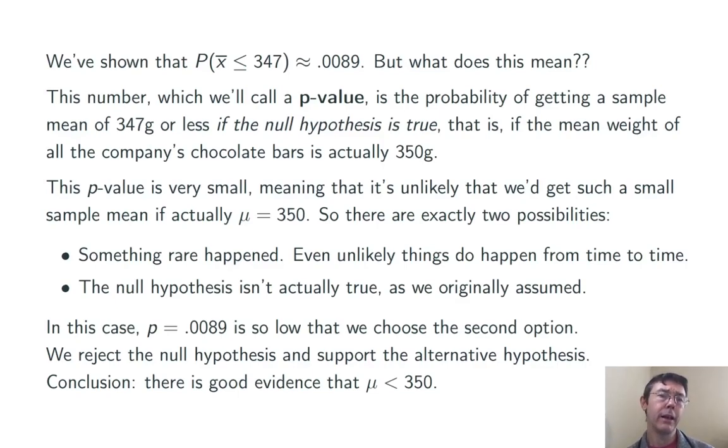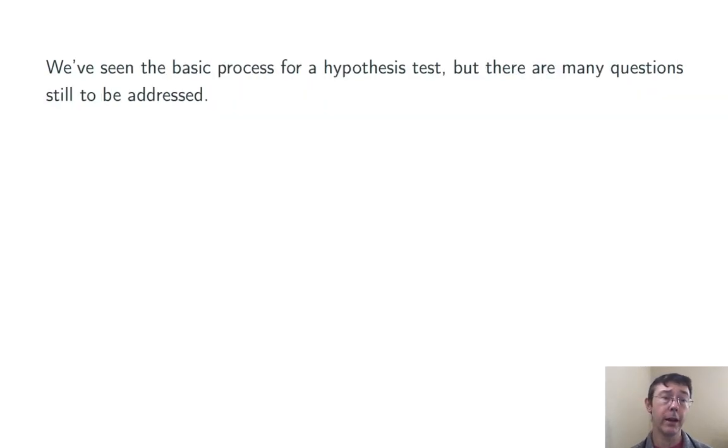In this case, the p-value that we got, that probability that we calculated, of 0.0089 is so low that the first option does not seem plausible. And so, we'll choose the second option. We reject the null hypothesis and support the alternative hypothesis, concluding that there is good evidence that the population mean weight of all the chocolate bars produced by this company is actually under 350 grams.